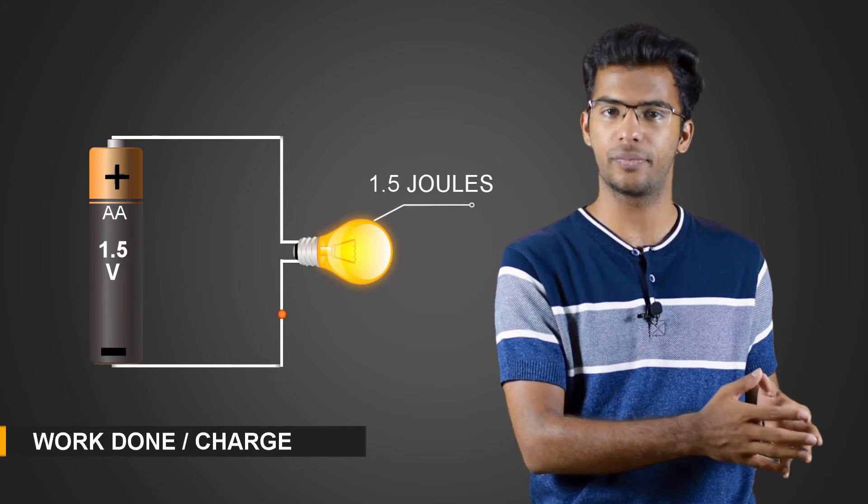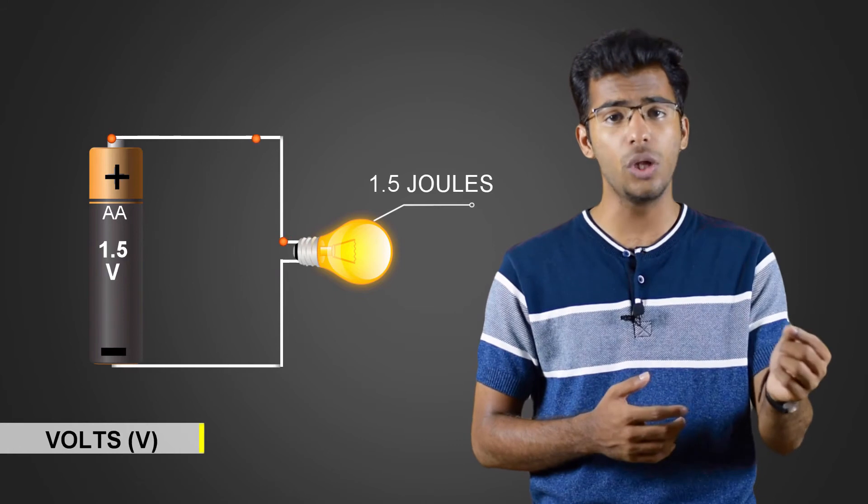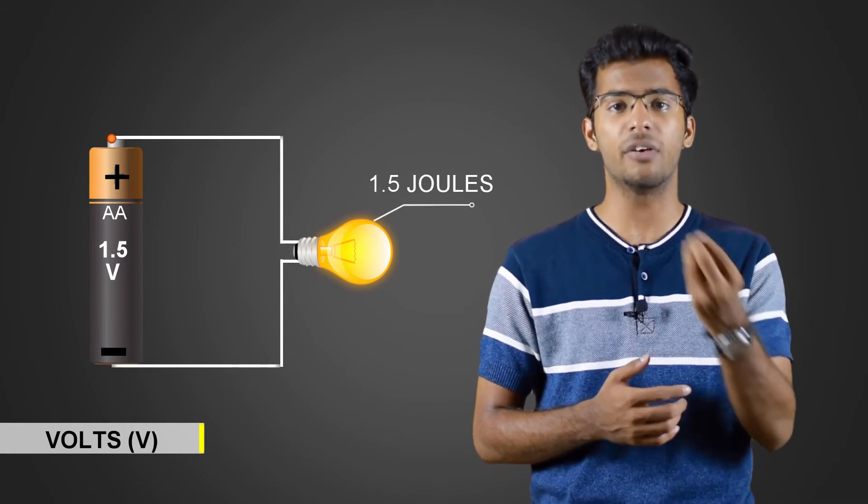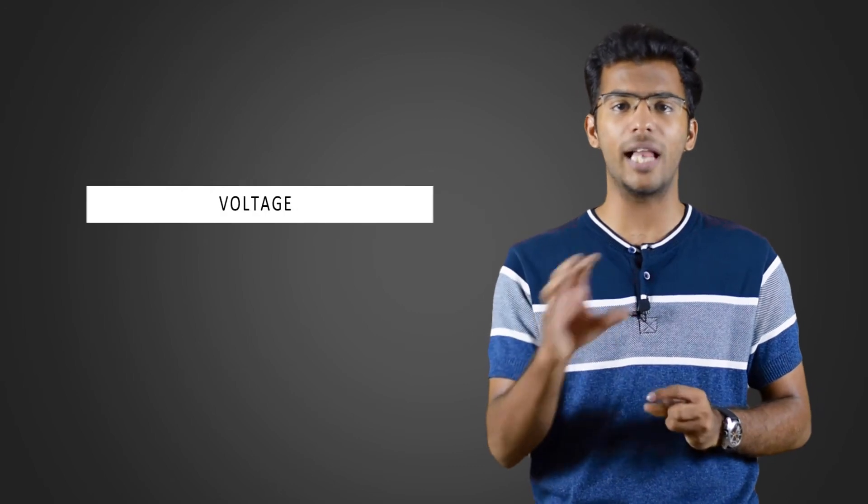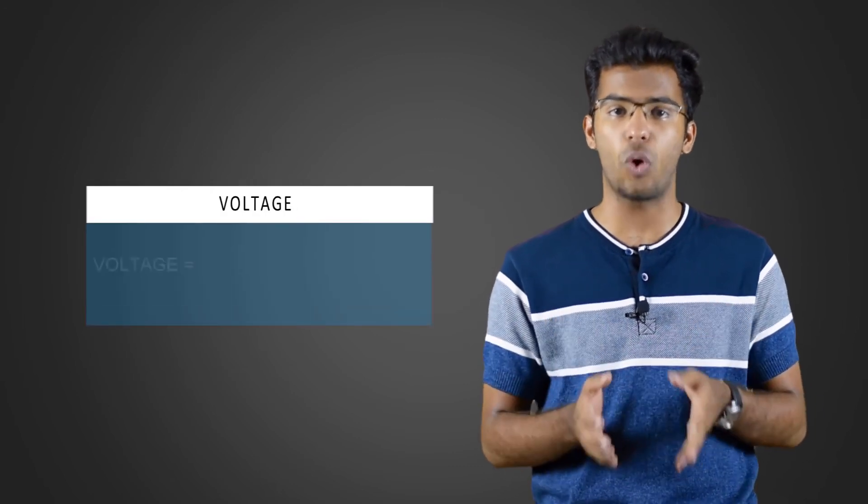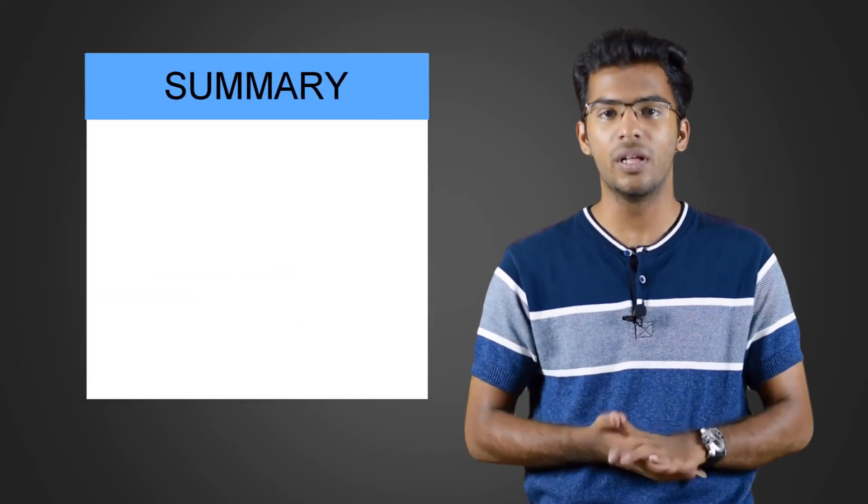We measure voltage in terms of volts or sometimes as joules per coulomb, and we denote it by letter V. We can also calculate voltage as product of current and resistance in a circuit.